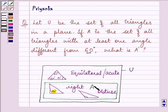So what will be A complement? It is obvious that A complement will be the triangle which is not included in set A and which is there in the universal set and hence it is the set of all the equilateral triangles.